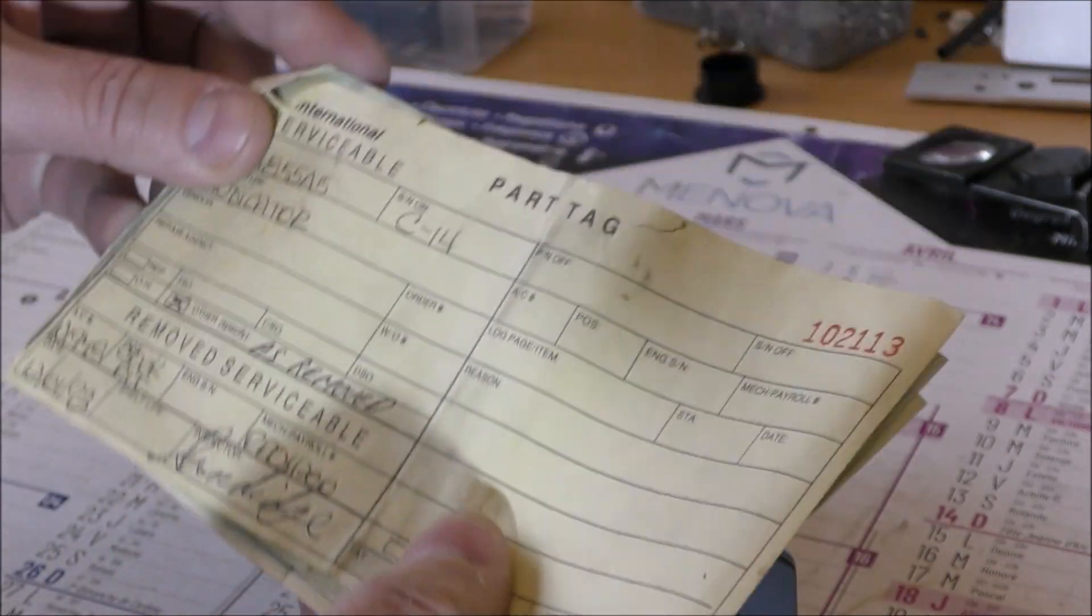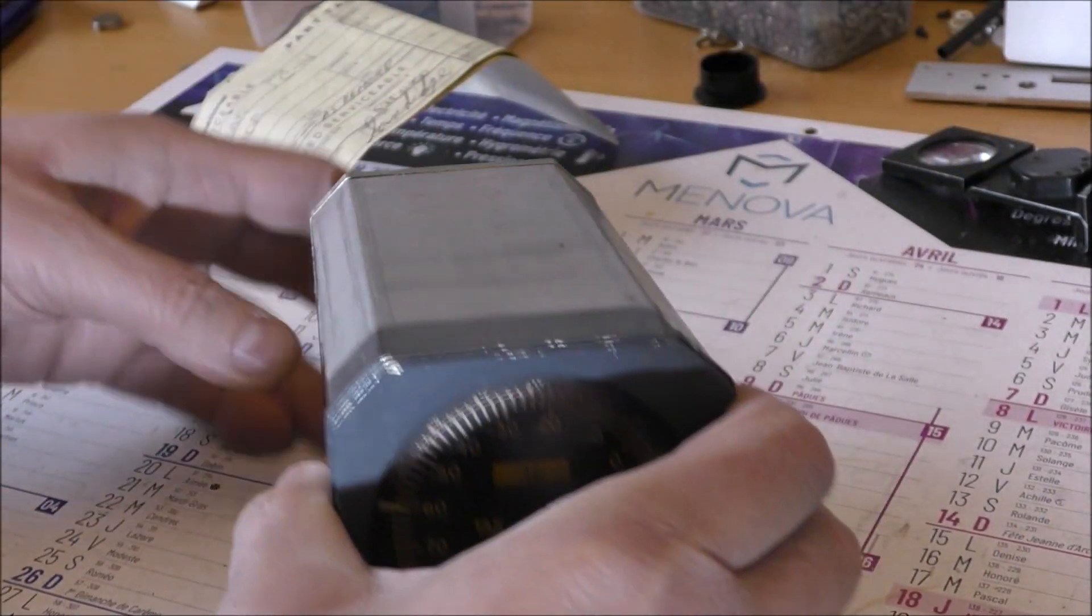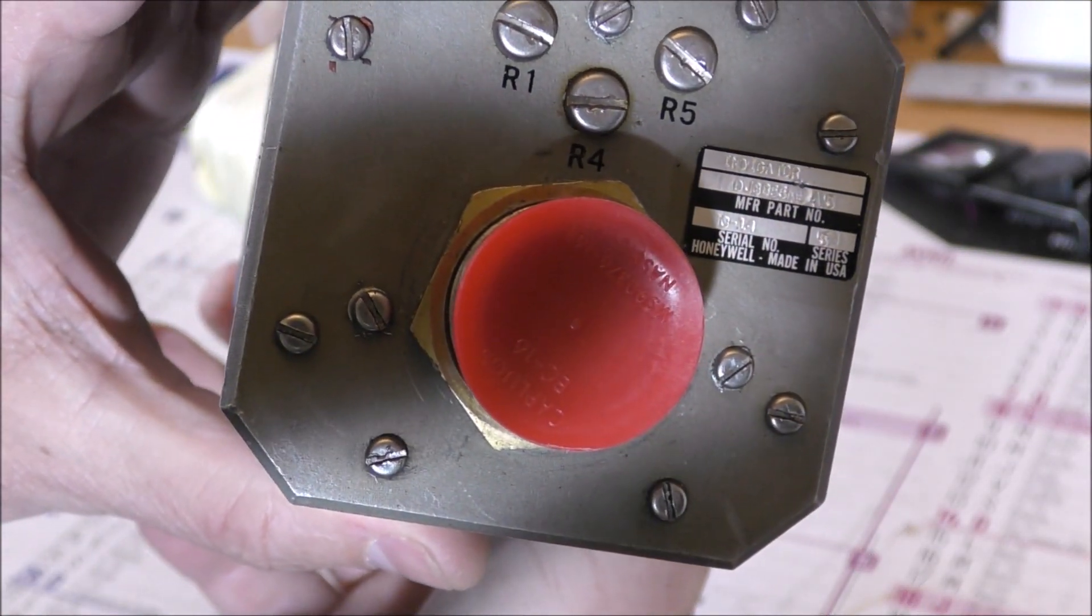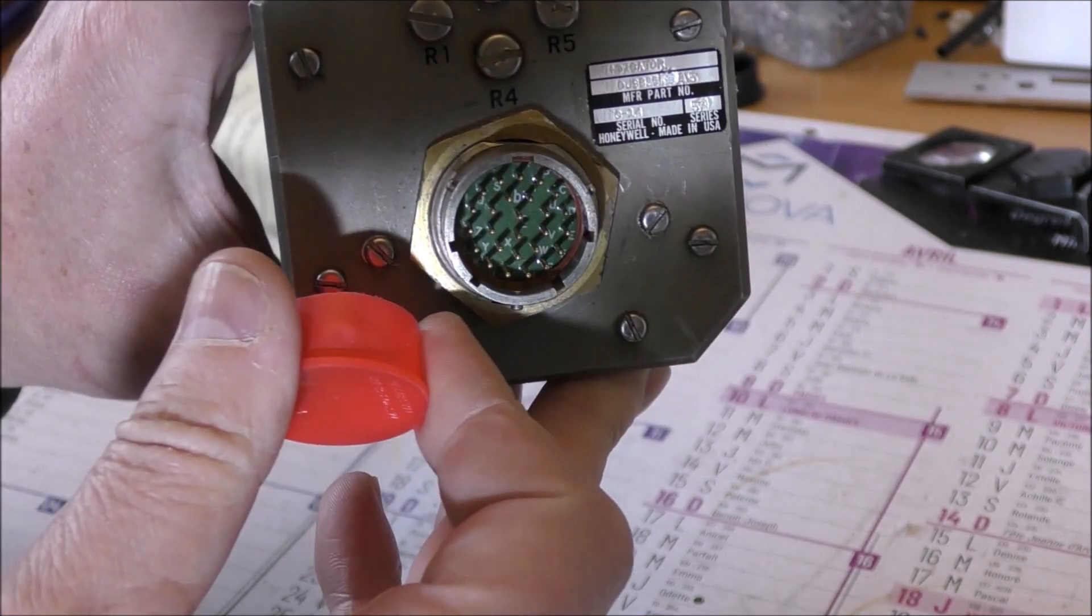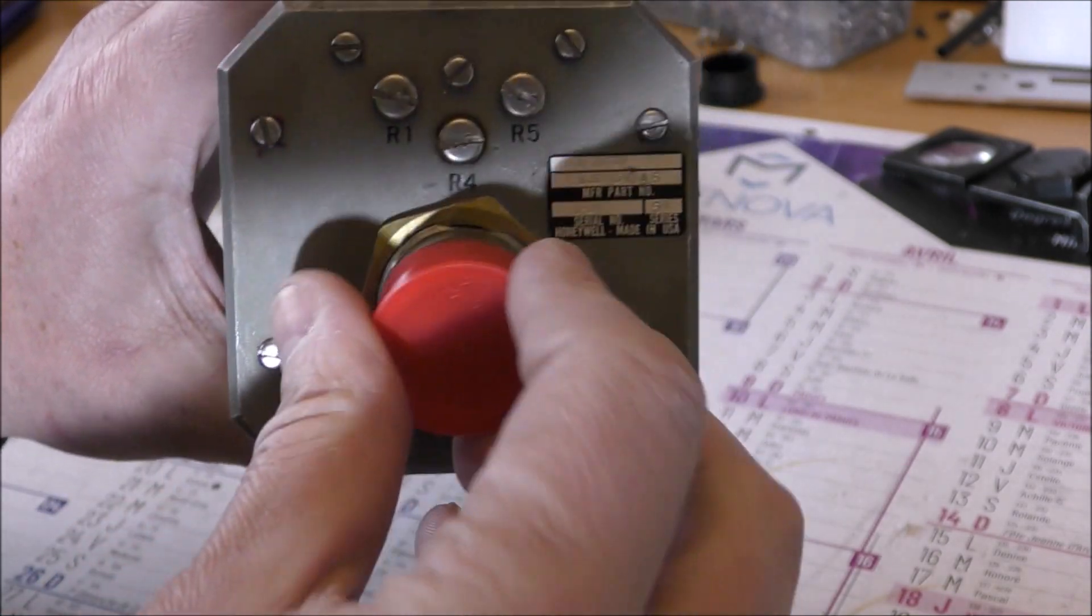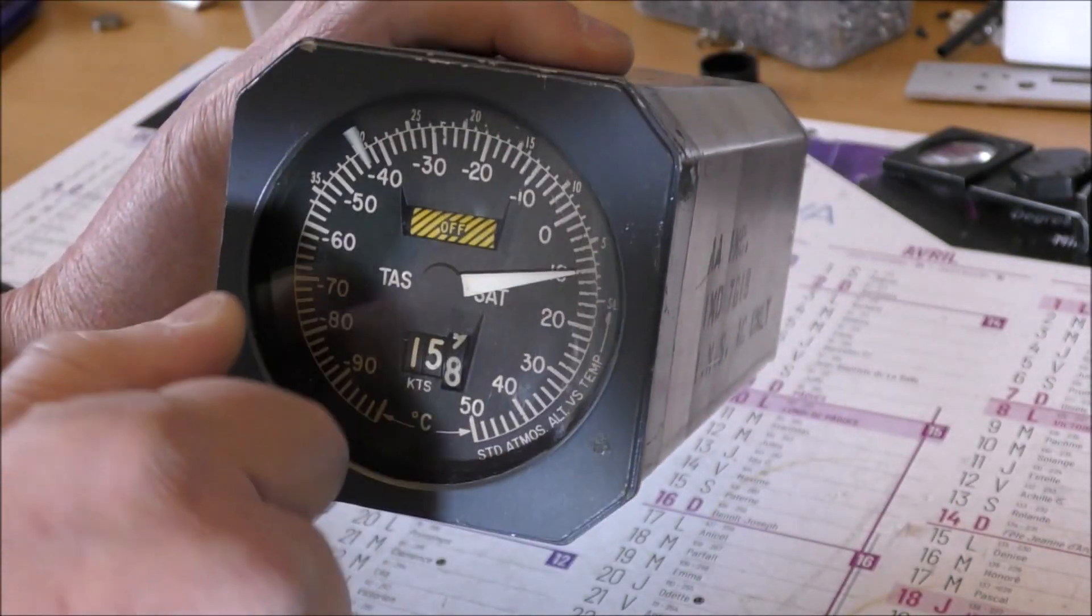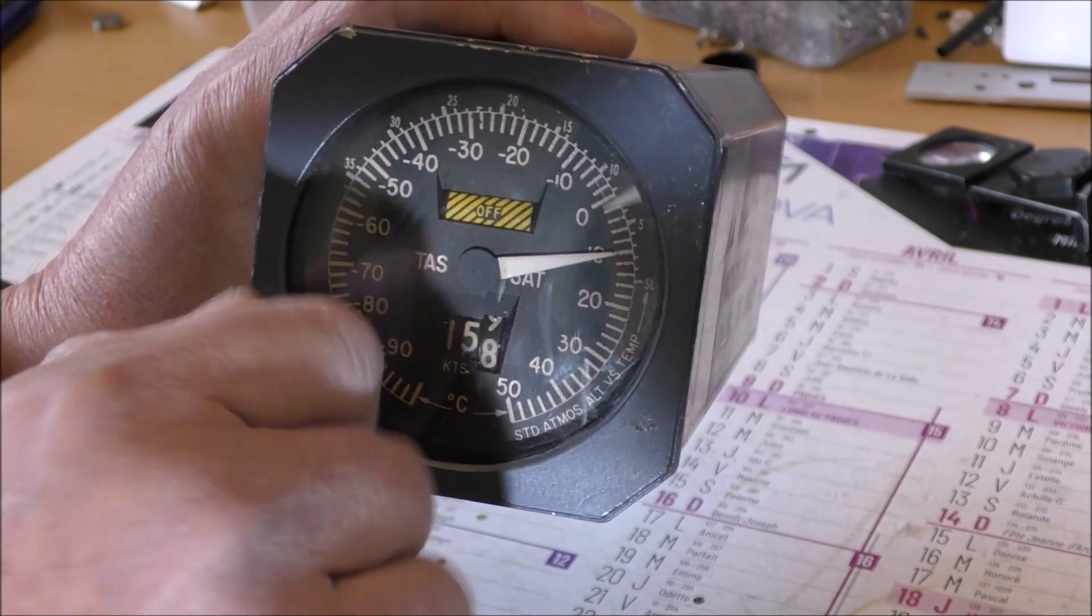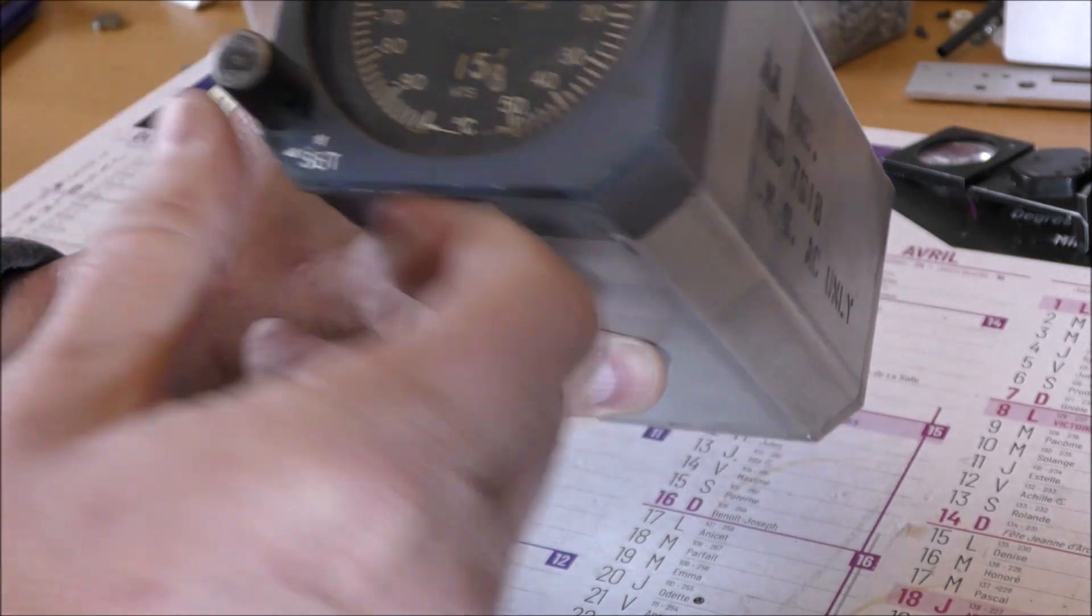There is a part tag removed serviceable. It seems that there are three adjustments here. There is a typical circular connector. On the front there is a knob which permits to set this index here, and there is also a button push to test.